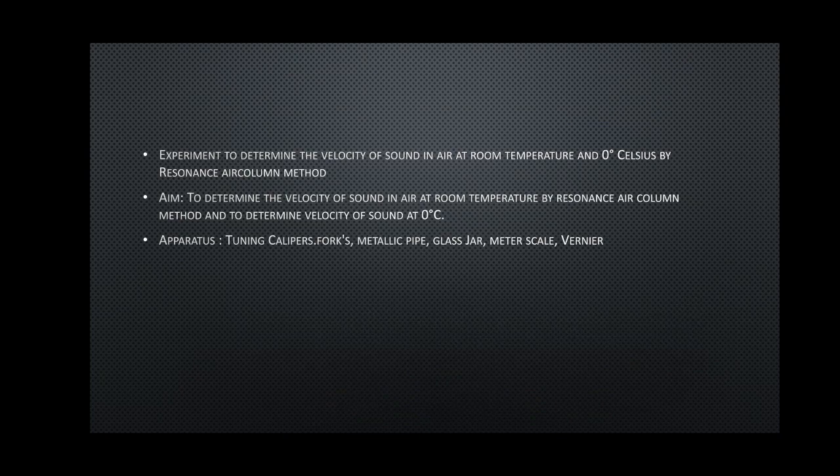Experiment to determine the velocity of sound in air at room temperature and at zero degrees centigrade by the resonance air column method. If temperature changes, the velocity of sound changes. The aim is to find the velocity of sound in air at room temperature and determine the velocity at zero degrees centigrade. Apparatus needed: tuning fork, vernier calipers, metallic pipe, glass jar containing water, meter scale. In the experimental arrangement, there is a glass jar with water, a retort stand, and a hollow pipe partially immersed in water.